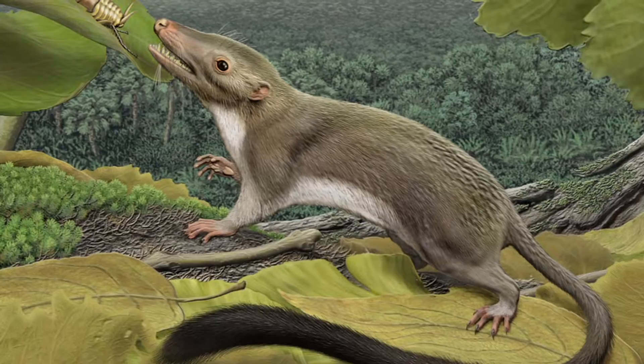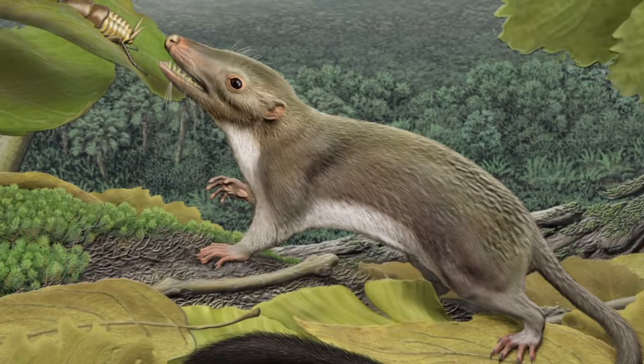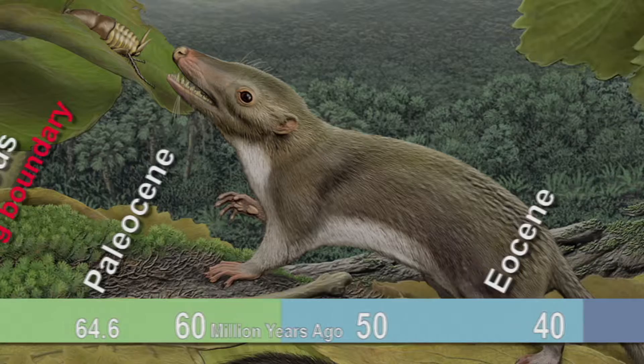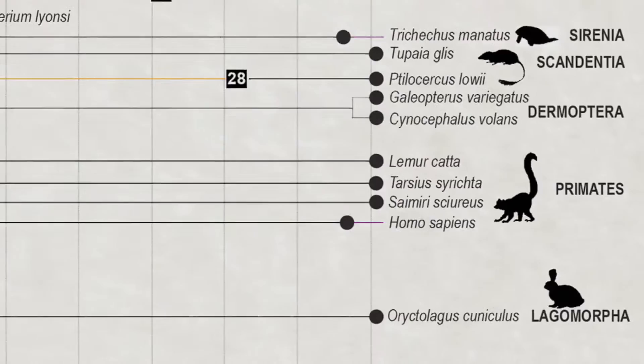It's a small, sort of brownish-gray species, bigger than a mouse, but about 250 grams. It was an insect-eating mammal, and it lived in what's called the early Paleocene, which is a time that just followed the extinction of the dinosaurs. Humans are definitely placental mammals, and this ancestor that we've reconstructed is part of our broad family tree.